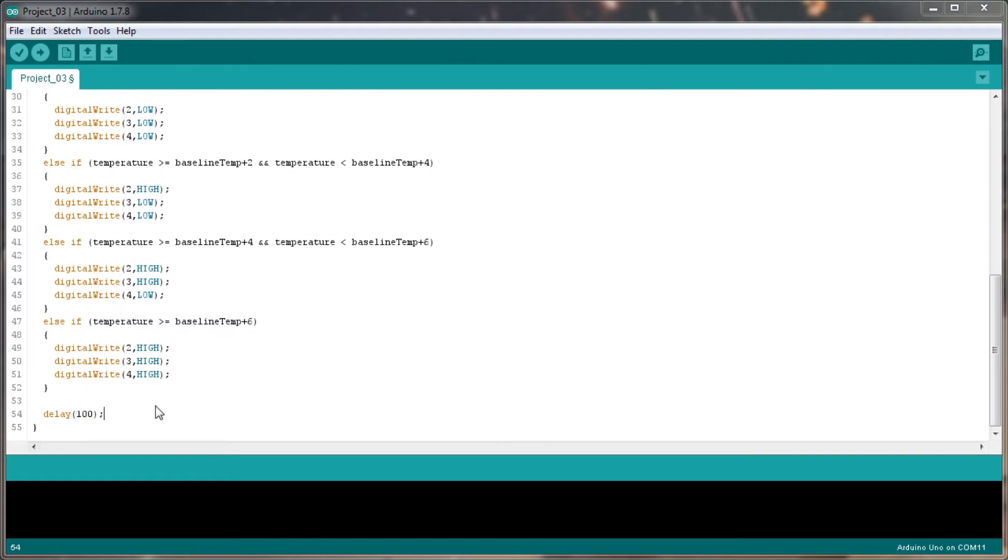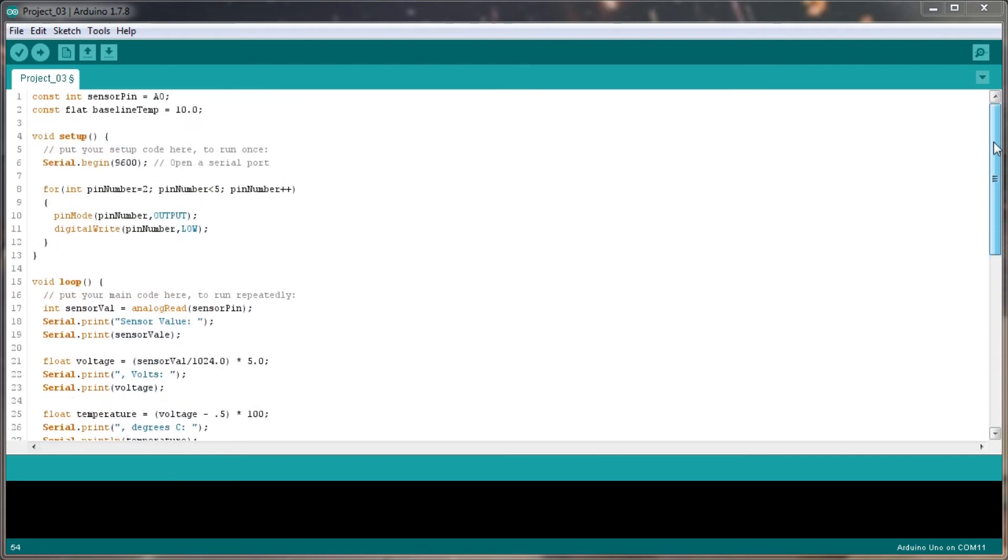Alright, so that's all of the coding done for project 3. Basically what we're doing here is in the setup, we're opening a serial port at 9600, and we're looking at each one of the pin numbers between 2 and 4. We are setting the pin numbers to output, and we're writing the pin number output to low, so that's basically switching off all three of our LEDs.